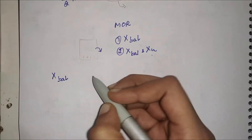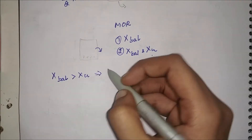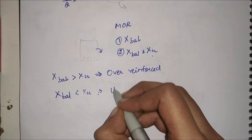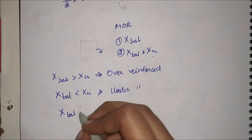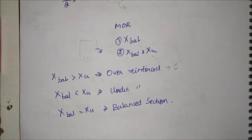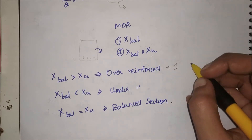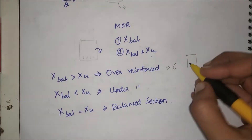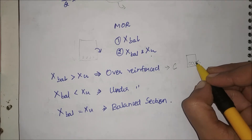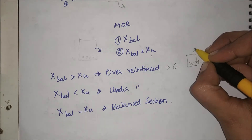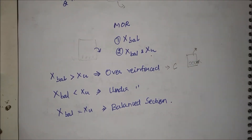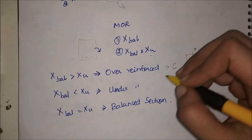Based on that comparison there are three criteria: if x_balance is greater than x_u it is over-reinforced; if x_balance is less than x_u it is under-reinforced; if x_balance equals x_u it is a balanced section. In an over-reinforced structure, concrete fails first because the amount of steel is more, so stresses in concrete reach the critical point first. This failure is very sudden because concrete gives no warning.